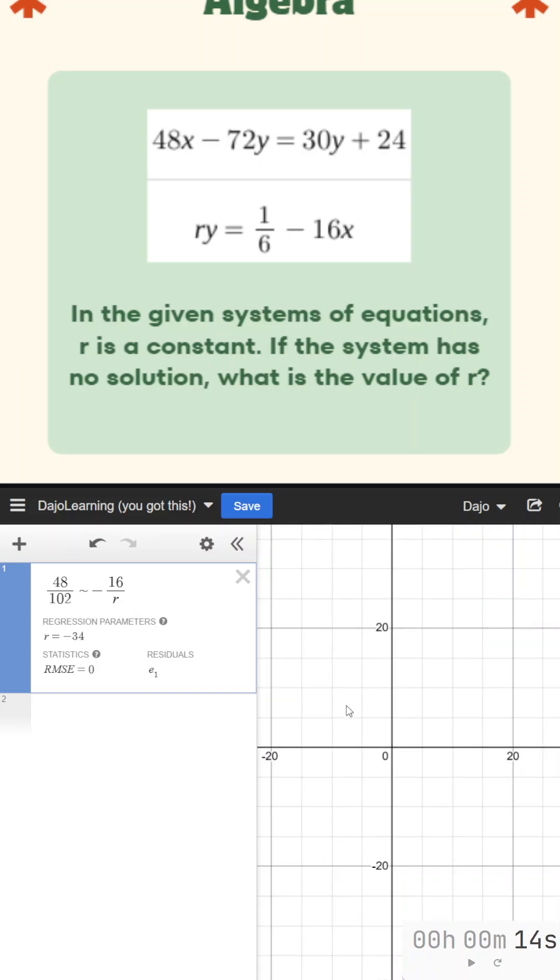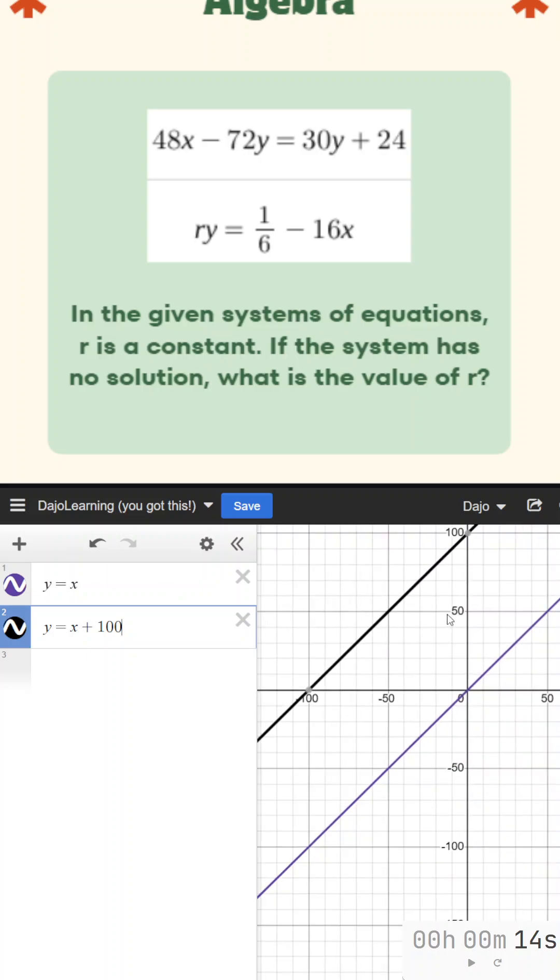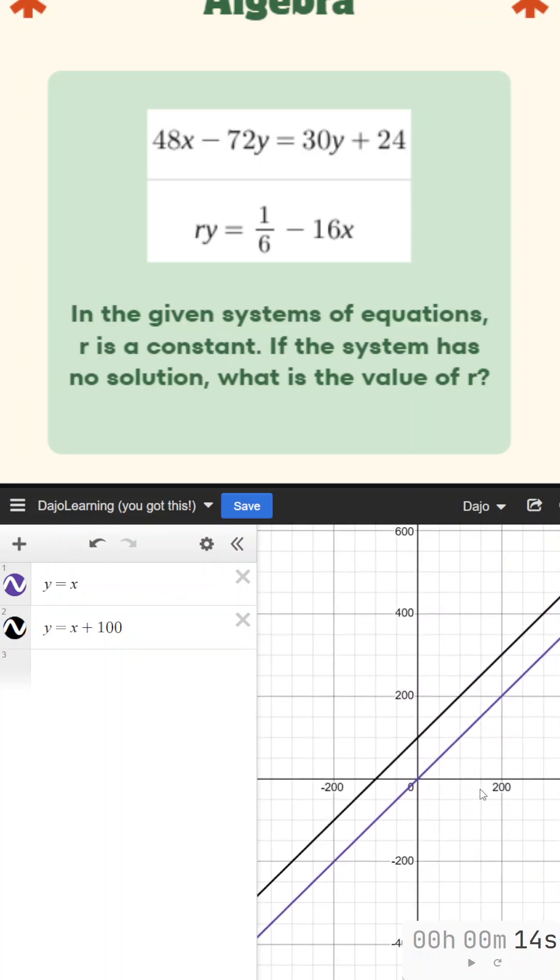And you're probably staring at this and going, how do you know how to do that? Well, I want you to understand what it means to have no solution. No solution, in this case, means no intersection. So for instance, this would be parallel lines, and they never touch. Therefore, they have no solution.